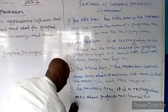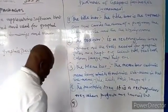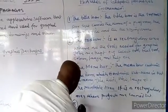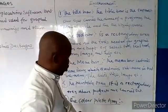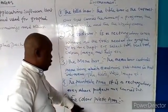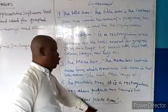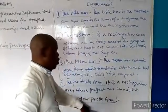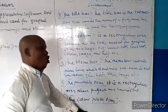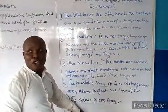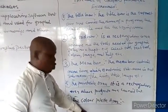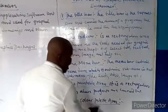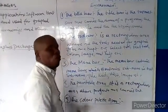Number five is the color palette area. You find every color you need to color your project, image, or diagram you draw. You pick it from this area and use it.